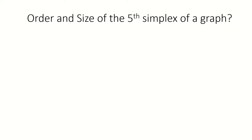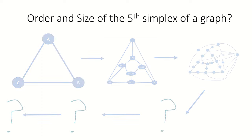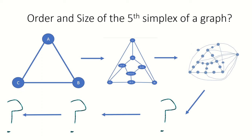What if you wanted to find the order and size of the fifth simplex of a graph? That sounds difficult, as you'd have to list all cliques, draw and connect simplex vertices, then repeat for each level. However, there's actually a very simple formula that lets you find the order and size of the nth simplex of a graph, provided you can find the order and size of the first simplex graph by hand.